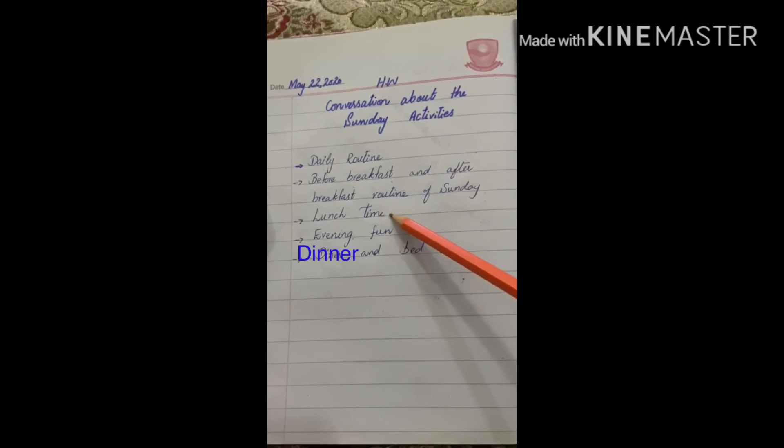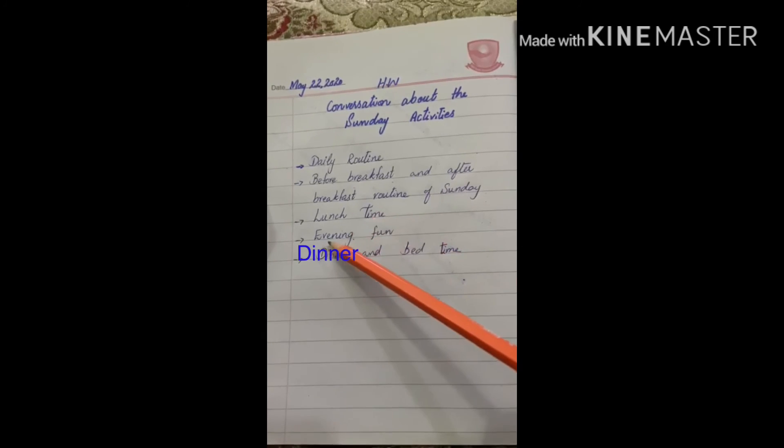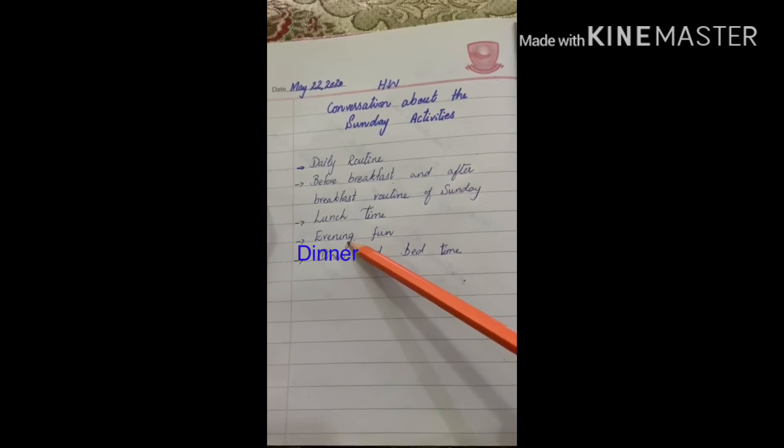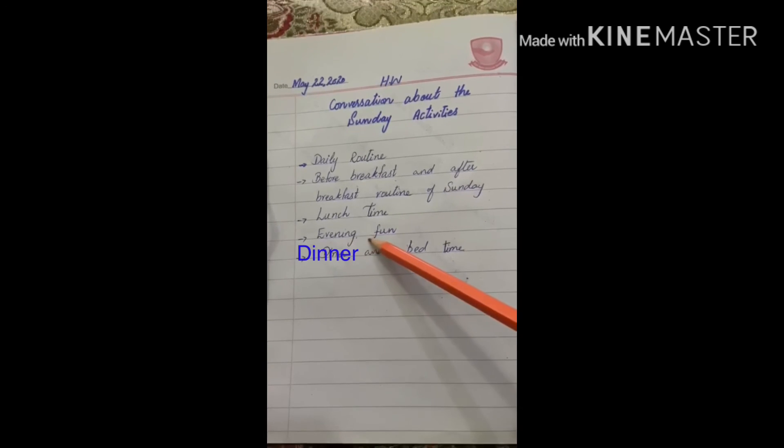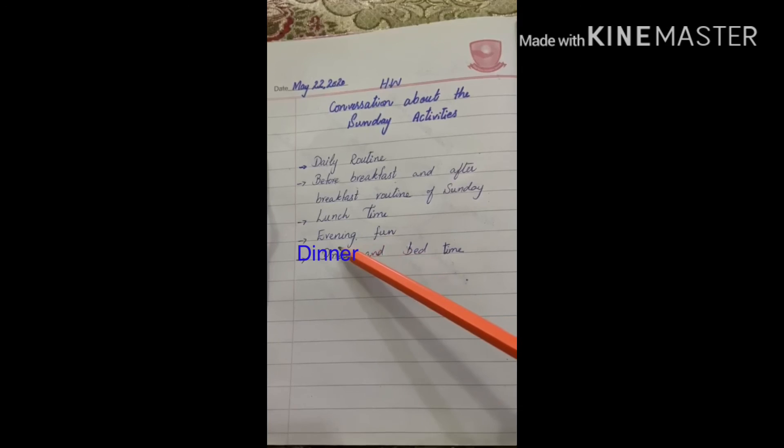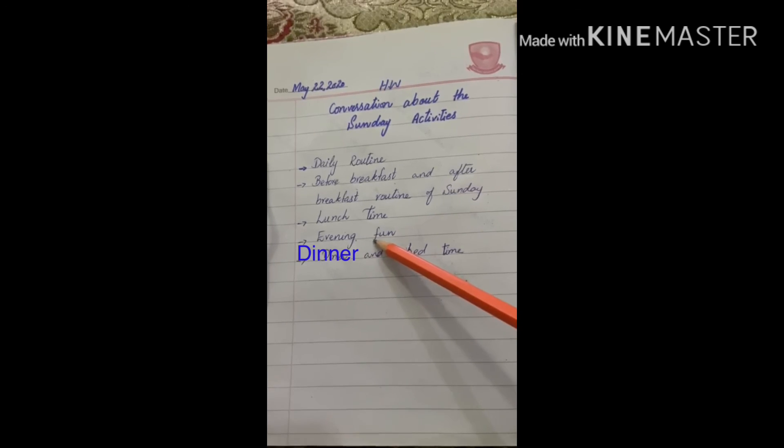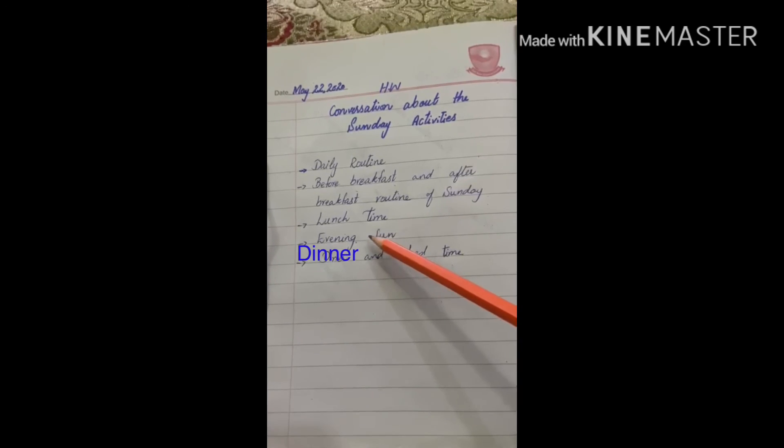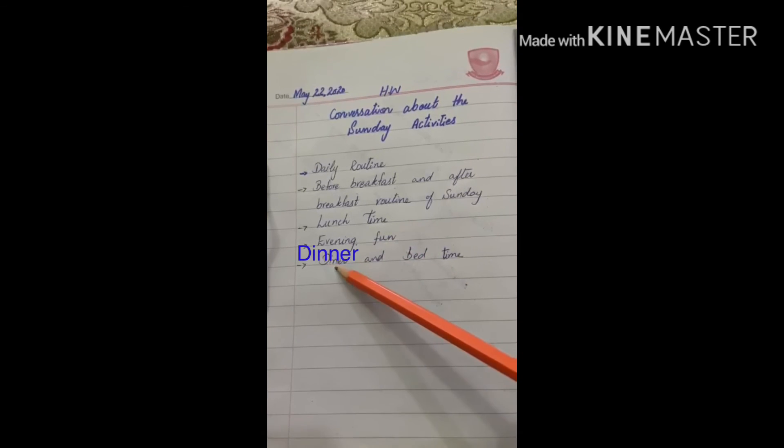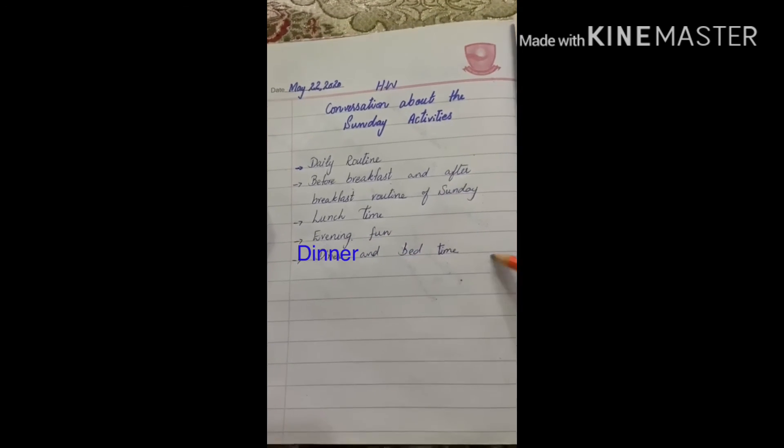After that, talk about your evening. Is the evening a fun time for you? Do you play different games? Do you go shopping? Do you go to a nearby park? Do you visit relatives' homes, or do you invite someone to your home? Talk about it. And after that, talk about your dinner time and bed time. Thank you.